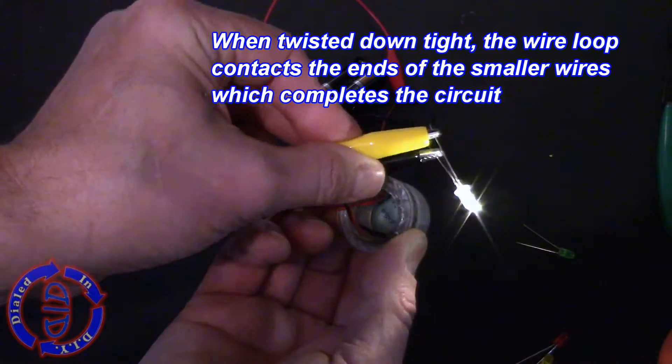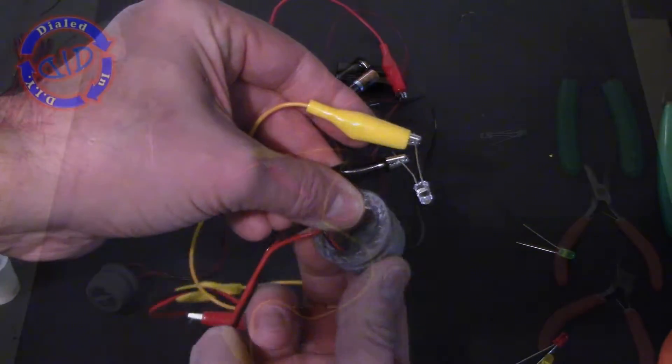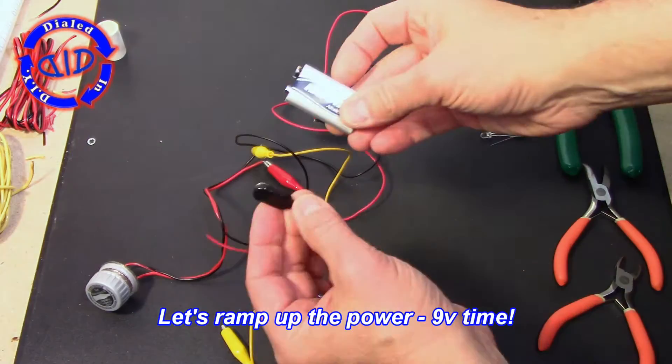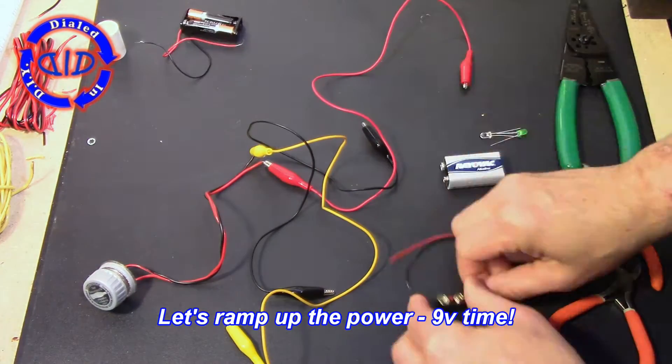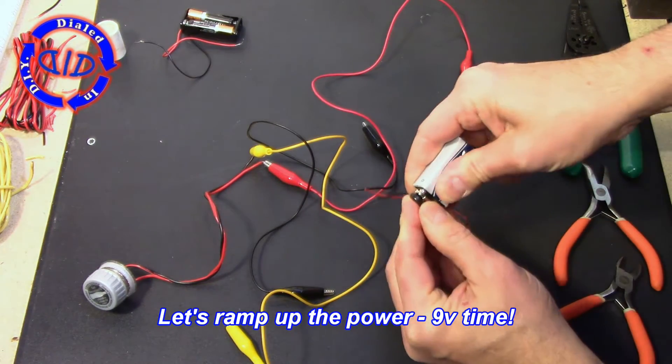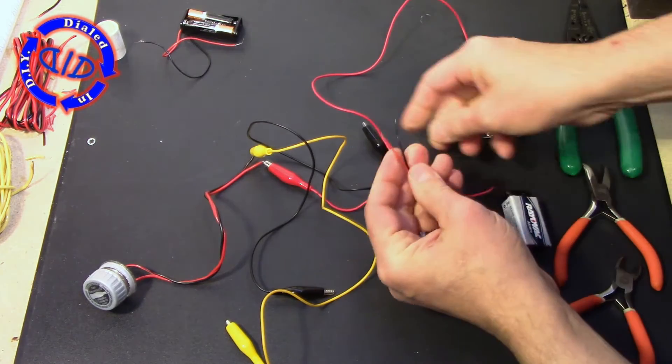The reason this works is because the two wires that you put through the side of the cap actually leave a break in the circuit for the positive lead from the power source. Once you twist that cap down tight the wire on the inside allows that connection to be completed.